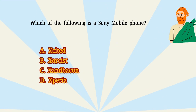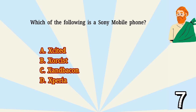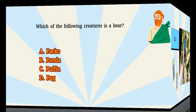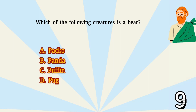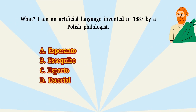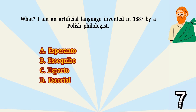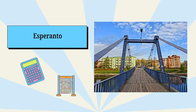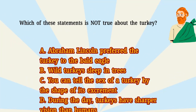Which of the following is a Sony mobile phone? I am an artificial language invented in 1887 by a Polish philologist. Which of these statements is not true about the turkey?